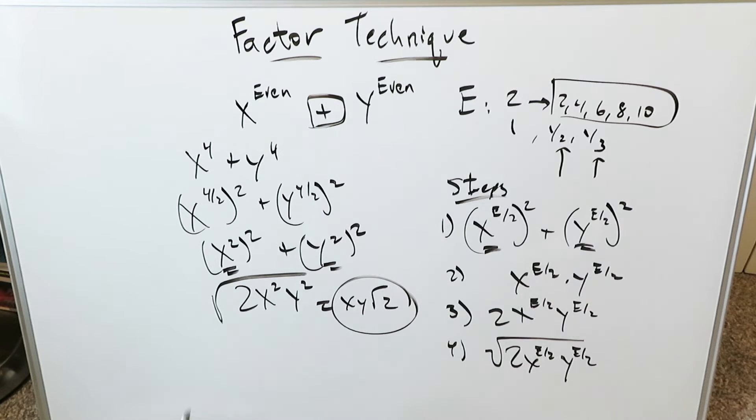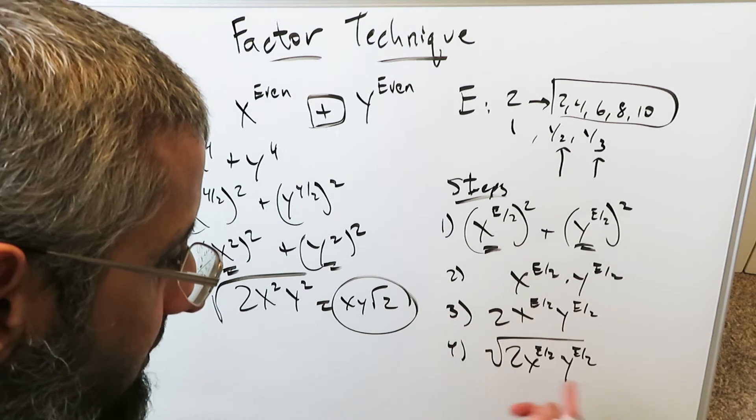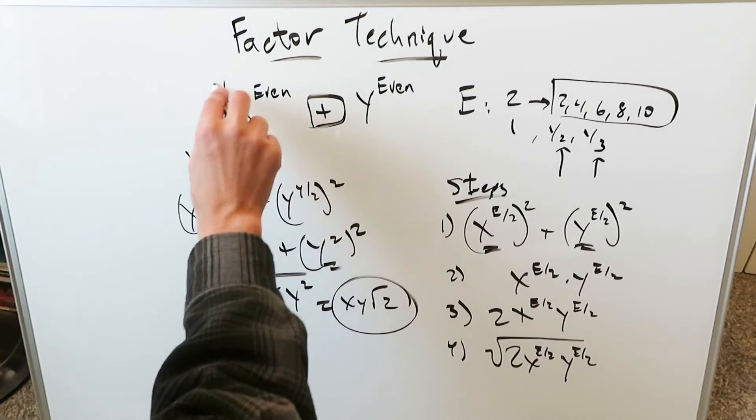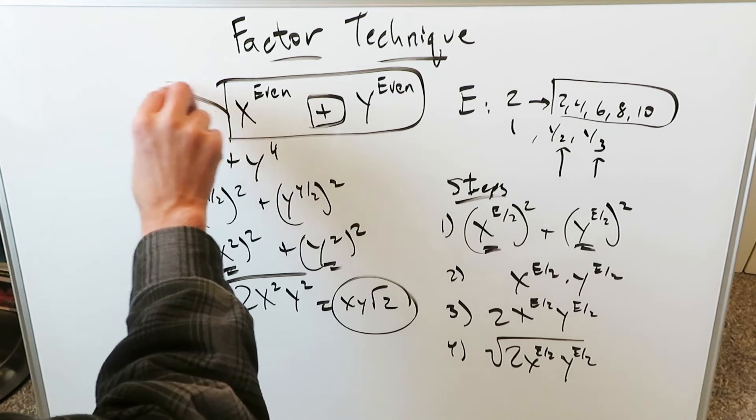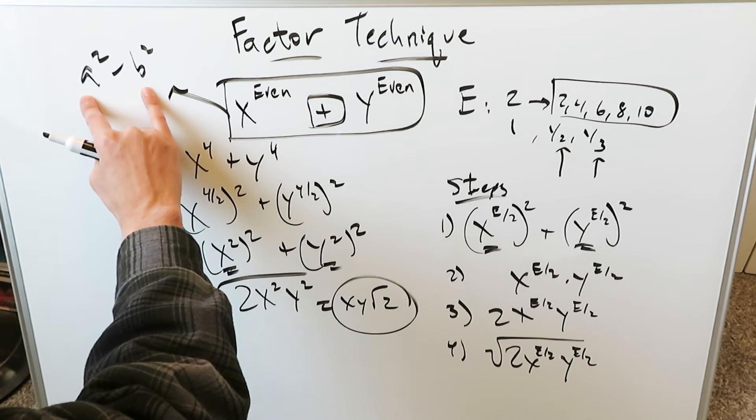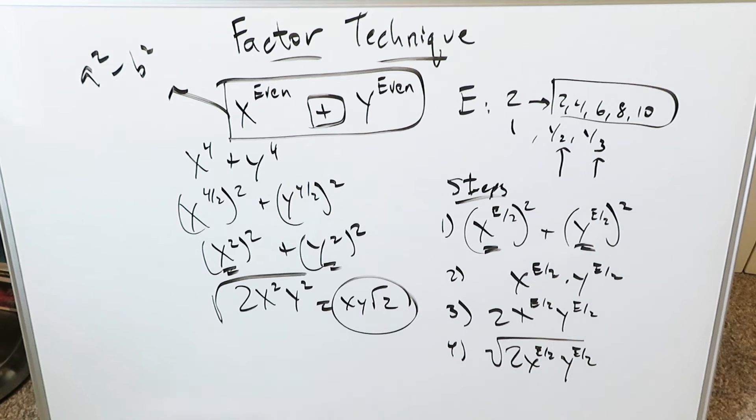You have three terms of importance. Term number 1, number 2, number 3. 1, 2, and 3. These are your three important terms. The reason why you have to follow these steps in a step-by-step manner is because this entire template has to transform into this. a squared minus b squared. Where a and b can have their own internal exponents, but you must have an exponent 2.